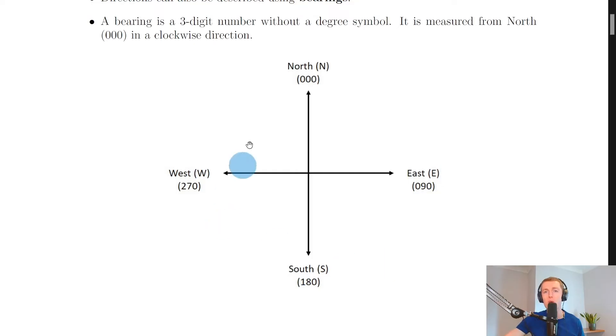Just like we remember the compass points north, east, south, and west in a clockwise direction, we also think about bearings as starting off at north and moving in a clockwise direction. You can see from this diagram here we have north, east, south, and west, and then we've got the bearings underneath as well.